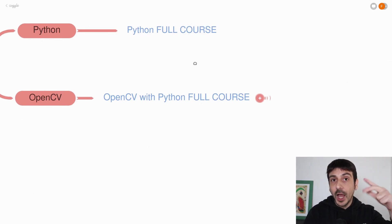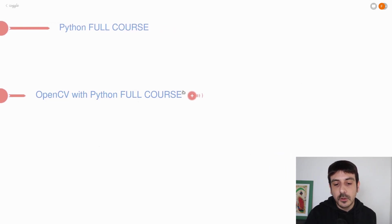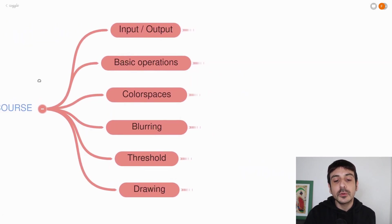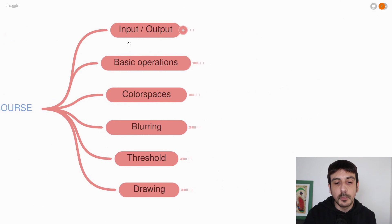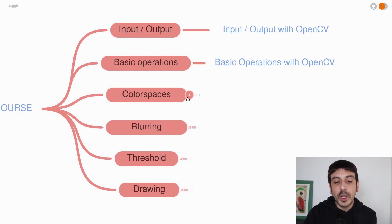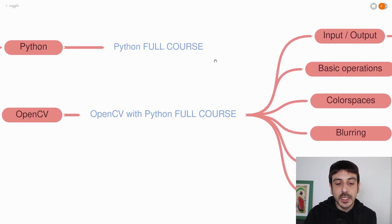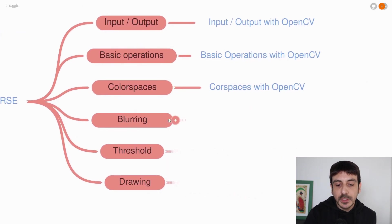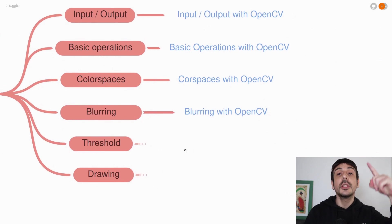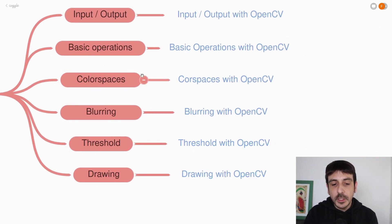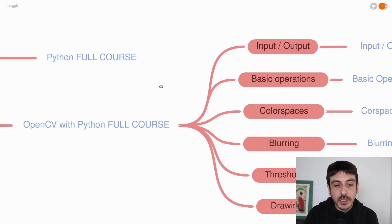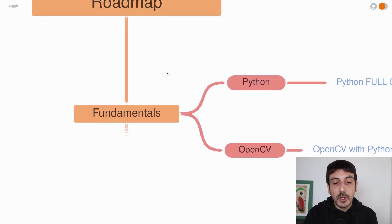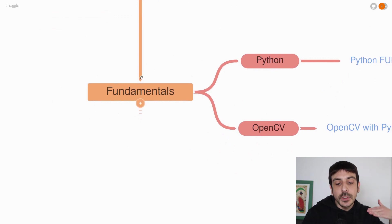But if you do not have three hours to take this course, then these are the most important lessons you should take in order to cover the basics of OpenCV with Python. So if you do have three hours, please take a look at this course, but if you do not, don't worry — you can just take some of these lessons and you are going to cover the most important aspects of OpenCV with Python. This is the first step you should take in order to learn computer vision and become a computer vision engineer.